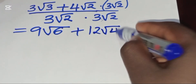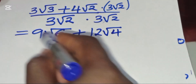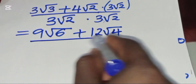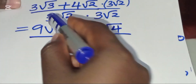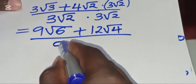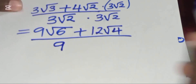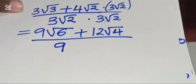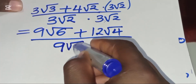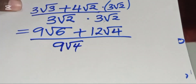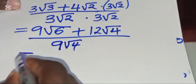Now for the denominator: 3 times 3 is 9, and square root of 2 times square root of 2 is square root of 4, which equals 2. So the denominator is 9 times 2.